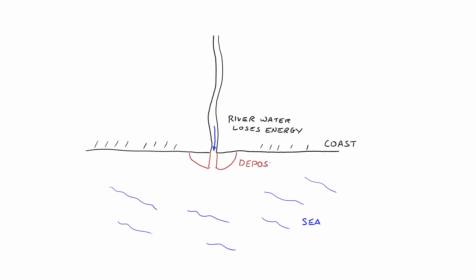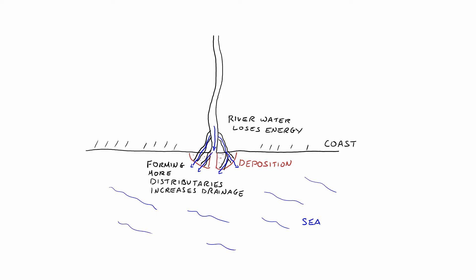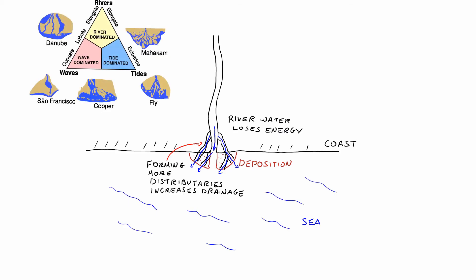When it loses energy this causes deposition to form, as we can see on the diagram. However the water wants to escape and wants to drain as fast as possible into the sea or the lake, and because of this it tends to form distributaries that try and drain the water as fast as it possibly can. It is this distributary that forms the typical delta shape that we are talking about.